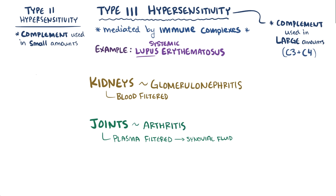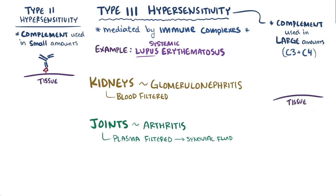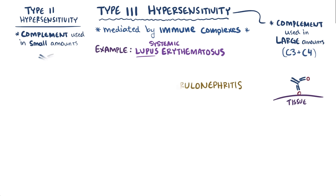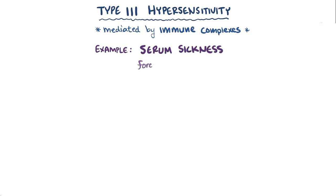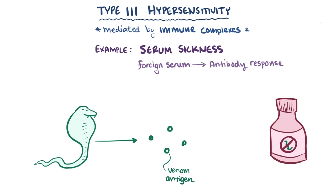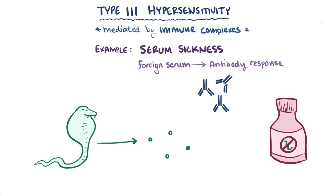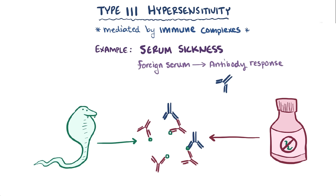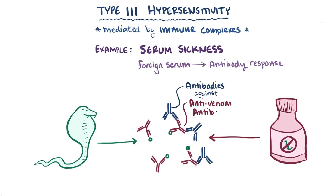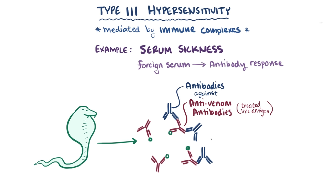This brings up a third major distinction between type 2 hypersensitivity, where clinical symptoms correspond to the tissue where antibodies attach to and destroy cells, and type 3 hypersensitivity, where clinical symptoms correspond to the tissue where immune complexes are deposited, not where the immune complexes are made. Another example of a type 3 hypersensitivity reaction is serum sickness, which typically happens when a patient receives foreign serum and elicits an antibody response against those foreign antigens. A classic example would be getting bitten by a snake and receiving serum with anti-venom antibodies. In response, the body makes antibodies against those anti-venom antibodies. If that person gets bitten again later and receives the serum again, those previously made antibodies will bind and form immune complexes with the anti-venom antibodies, now treated like an antigen. These immune complexes then cause vasculitis and tissue necrosis.